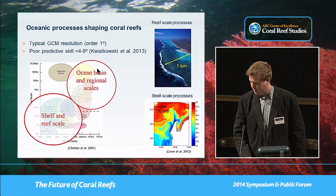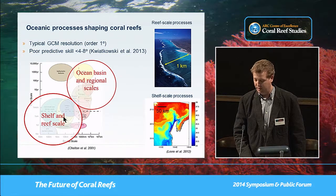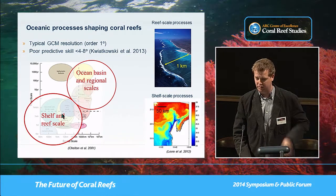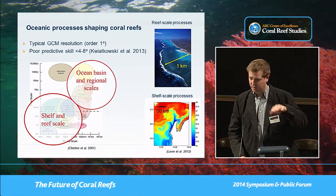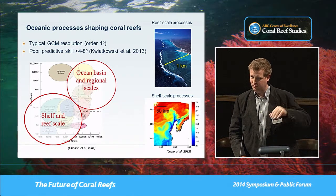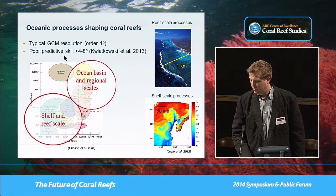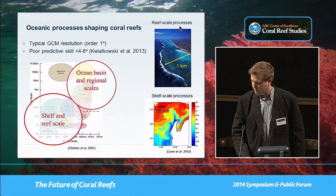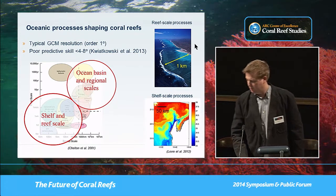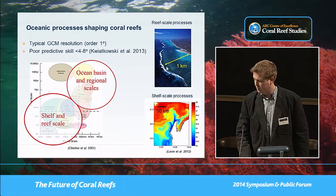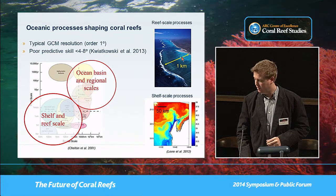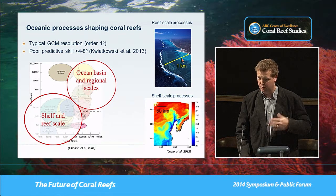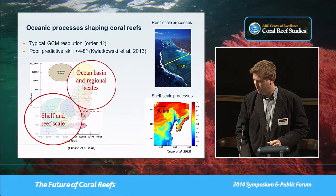The focus of this talk is on shelf and reef scale processes, which drive a lot of the circulation and implications for temperature variability. Looking at Ningaloo, a lot of the circulation and physical variability occurs over relatively small scales on the order of hundreds of meters within the reef.